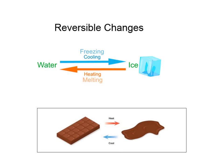Water can be changed into ice when it undergoes the freezing or cooling process, and that ice can be turned back into water — liquid form — by heating or melting. For this reason, freezing and melting are called reversible changes.